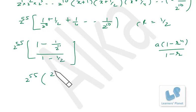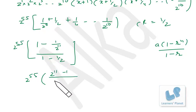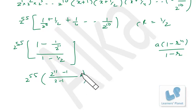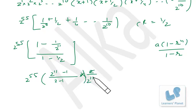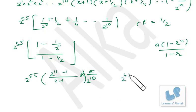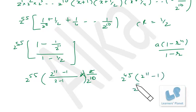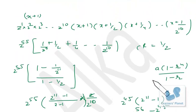Simplifying: (2^11 − 1) / 2^10. Multiplying by 2^55 from the common factors taken out earlier: the coefficient of x^10 is 2^55 × (2^11 − 1)/2^10, which gives 2^56 − 2^45.